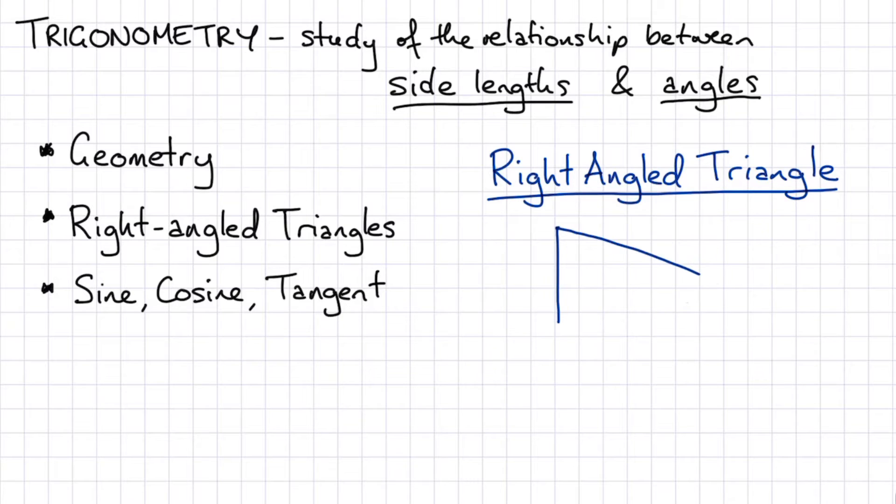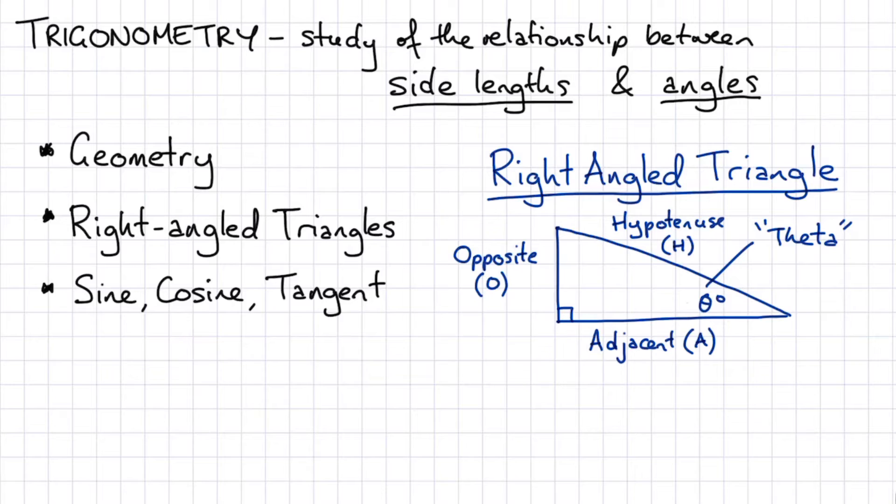First of all we're going to define a right angled triangle. We've got there a triangle with a right angle with that square there and also we've got theta there. That's the angle that we're concerned with. That's a Greek symbol, that theta symbol written in degrees there. The longest side of a triangle is the hypotenuse. That's always opposite to the right angle. The adjacent is next to that theta. It's always next to that theta and the opposite is on the other side of that theta, on the opposite side of that theta.